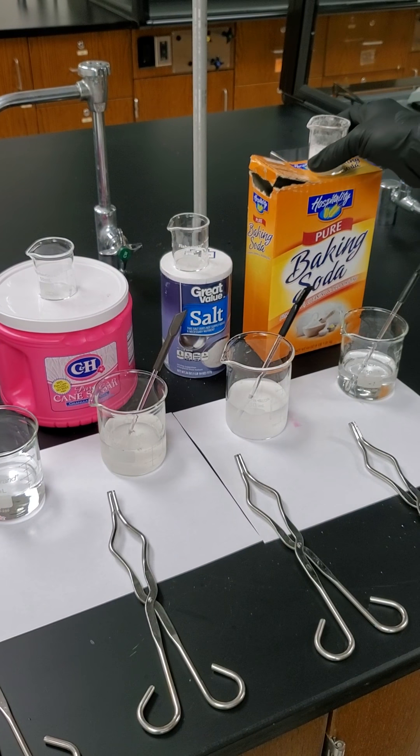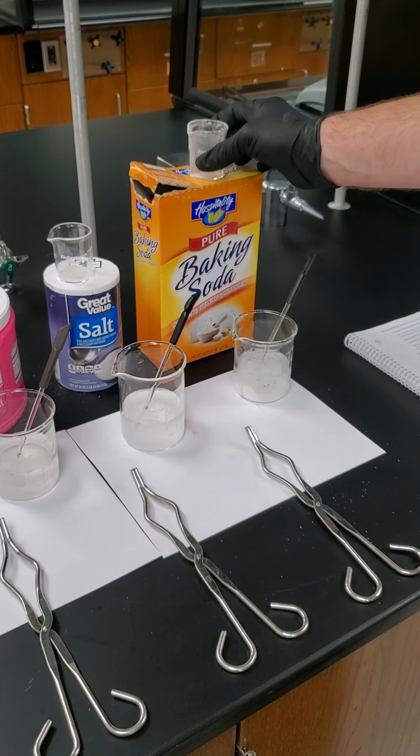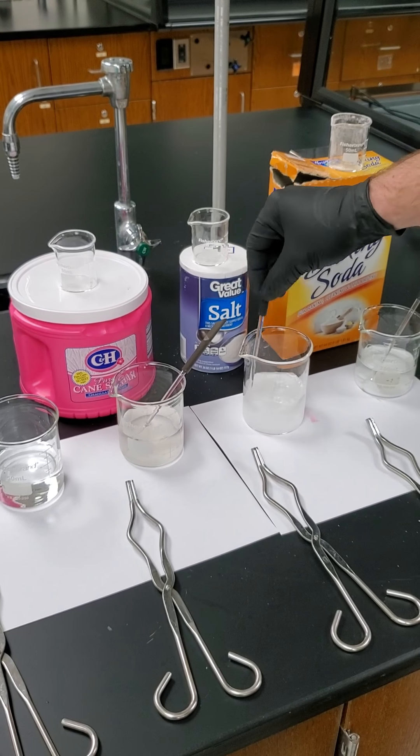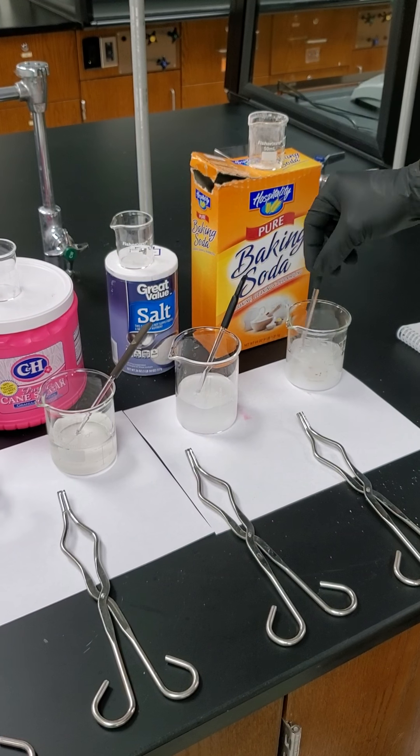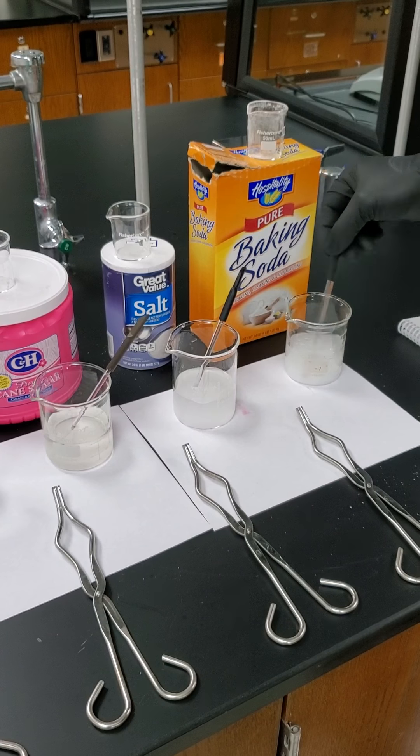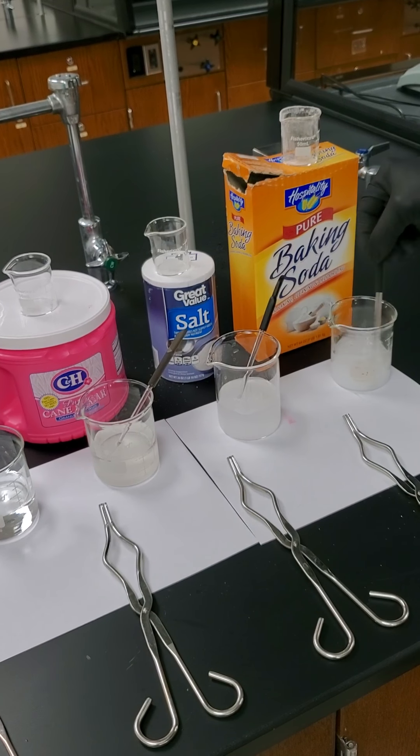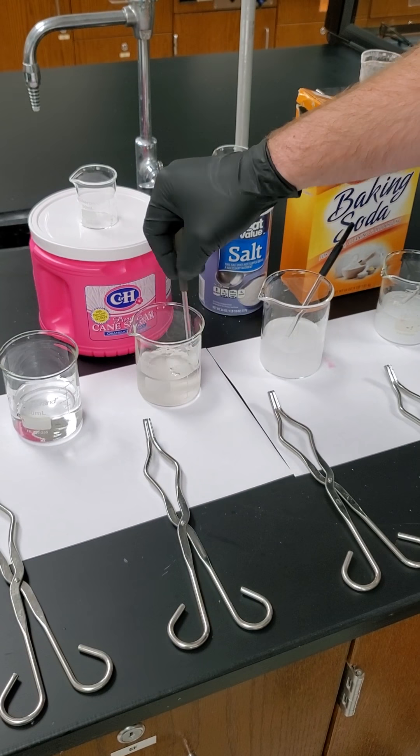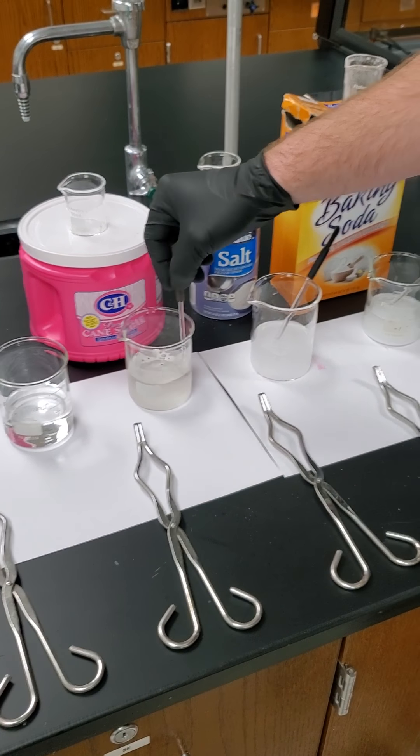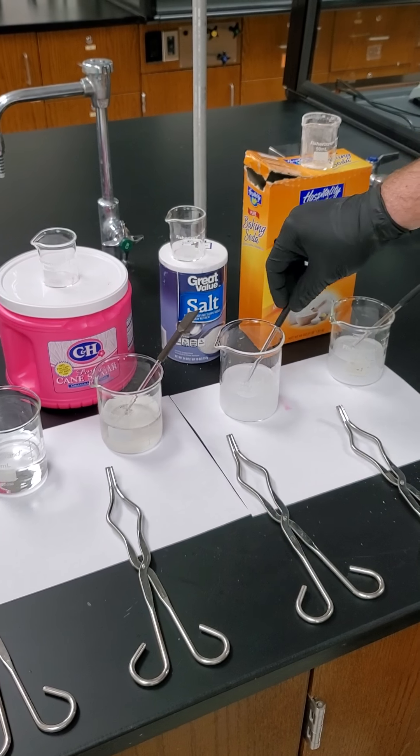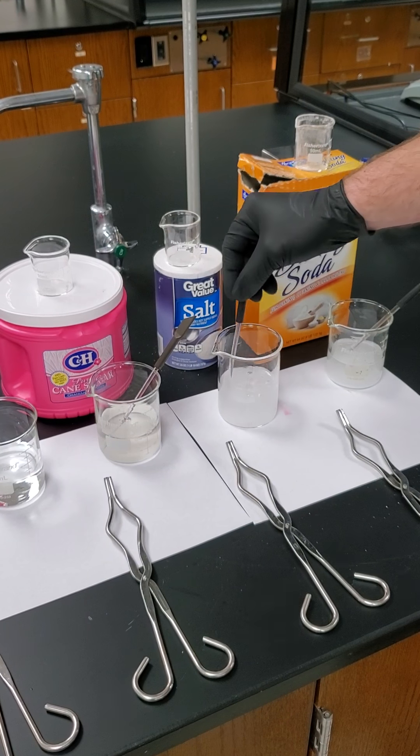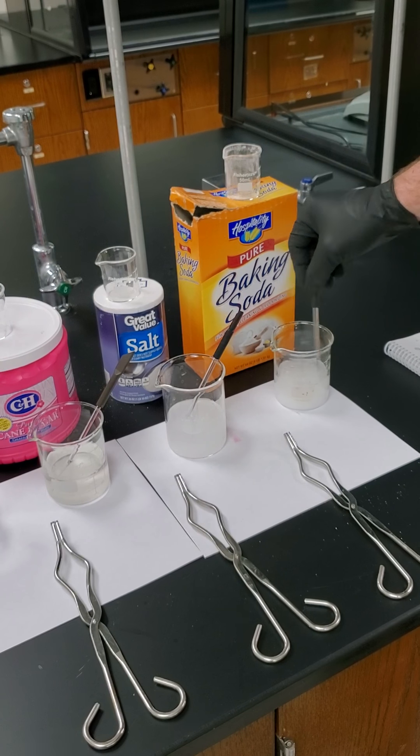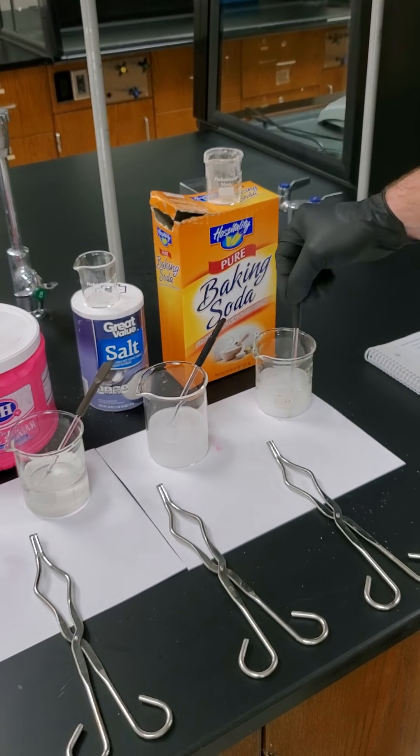When you stir things into water, something that we'll learn in our solutions chapter later in the semester, quite a few things get warm, cold, or stay the same. As we stir these, we're going to notice very quickly that baking soda, when you put it into water, it can get 10 to 15 degrees colder. So as we stir these, we're going to have to pay attention to temperature. And only when they're at the same temperature can we start to test them.